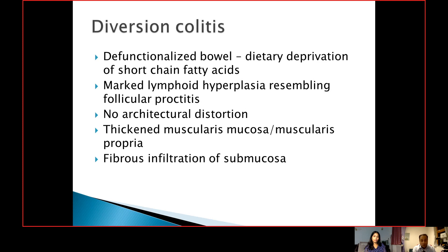Sometimes it becomes very difficult because the clinical query is whether this is diversion colitis or residual ulcerative colitis. Most of the time, when you don't see crypt architecture distortion and you don't see acute inflammation, you can say confidently these are features of diversion colitis. But sometimes it can become very difficult when you have features of ulcerative colitis as well — significant crypt architecture distortion, crypt abscesses, cryptitis, and ulceration. Then we say ulcerative colitis cannot be excluded, and the features can be of both diversion colitis with ulcerative colitis, leaving it to clinical radiological correlation. You have to be very careful about not missing dysplasia.